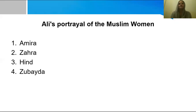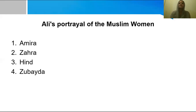The first category, orthodox, is represented by Amra, and the latter, unorthodox, is represented by Hind, Zubaydah, and Zahra. In this personal trajectory it becomes very significant to analyze the characters that Ali presents in Shadows of the Pomegranate Tree, and it is important to discuss each character in detail.